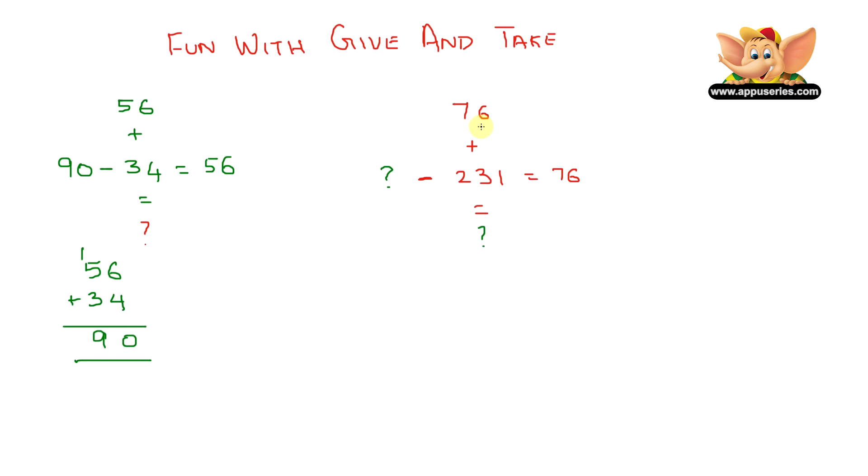Here we have 76 plus 231 equals question mark, and question mark minus 231 equals 76. Let's first add 76 plus 231. Let's add the ones: that's 6 plus 1 equals 7. In the tens we have 7 plus 3, that equals 10. Write the zero here and carry over the 1.